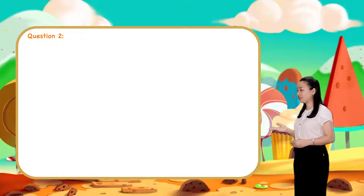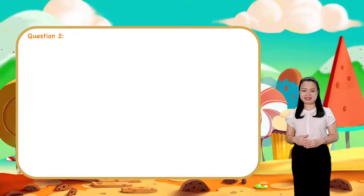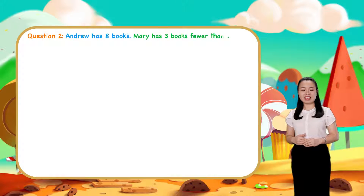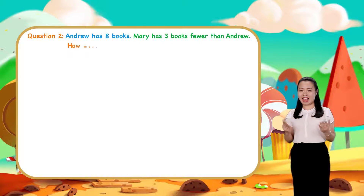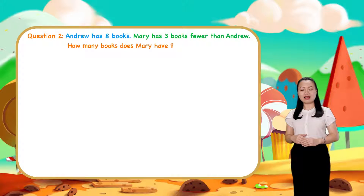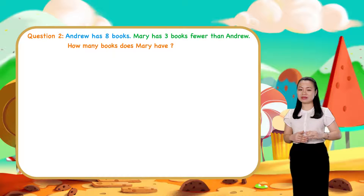Question 2. Andrew has 8 books. Mary has 3 books fewer than him. How many books does Mary have? I'll give you some time to find the answer for yourself.